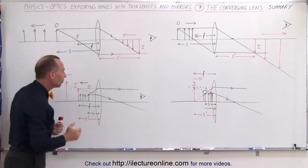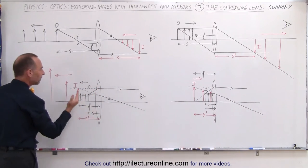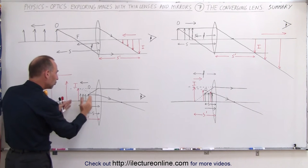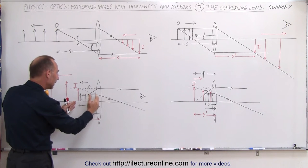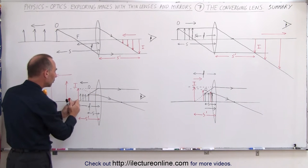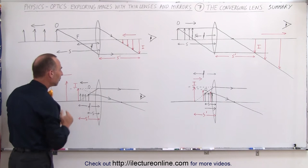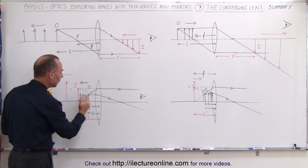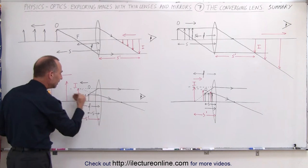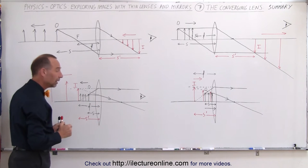In the other two instances, we brought the object between the lens and the focal point. First, we began at the halfway point and began to move the object closer and closer to the focal point.